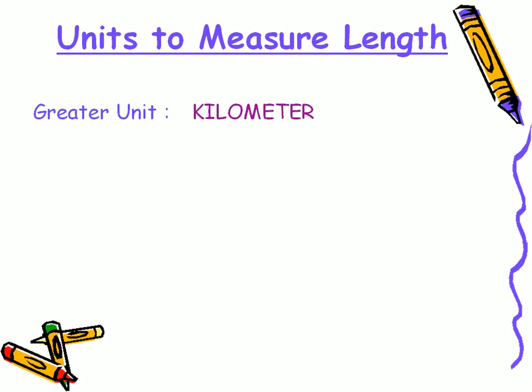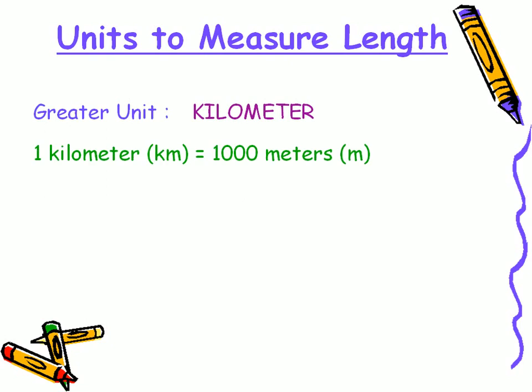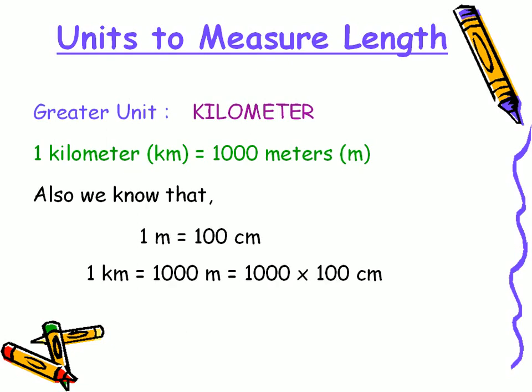Let's get acquainted with a greater unit of measurement, that is kilometers. Please remember that one kilometer is equal to one thousand meters. And as we know that one meter is equal to one hundred centimeters, so one kilometer can be said to be equal to one thousand meters, or one thousand times one hundred centimeters.